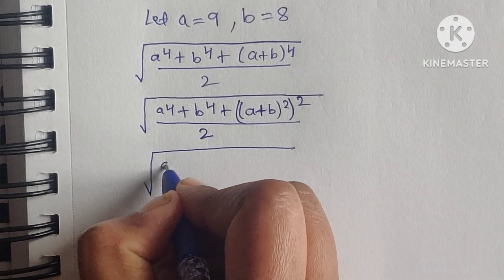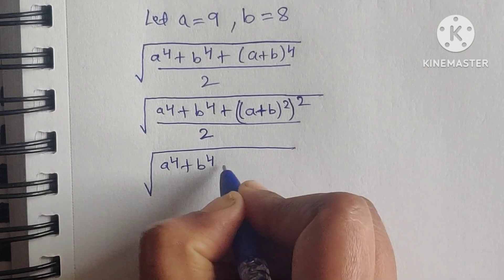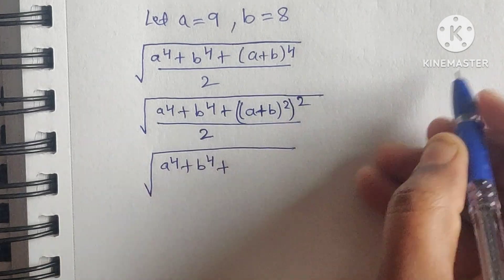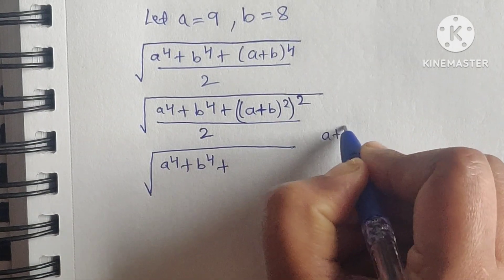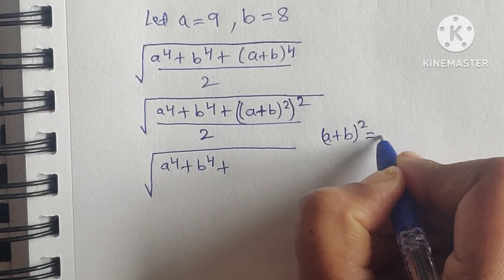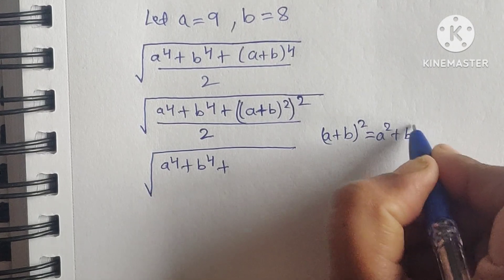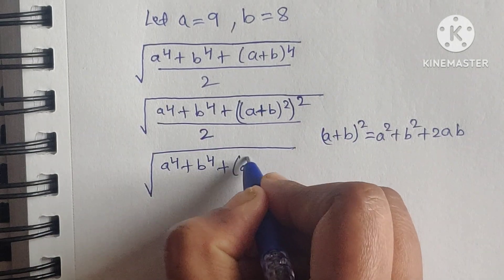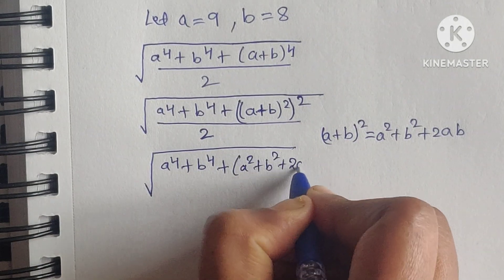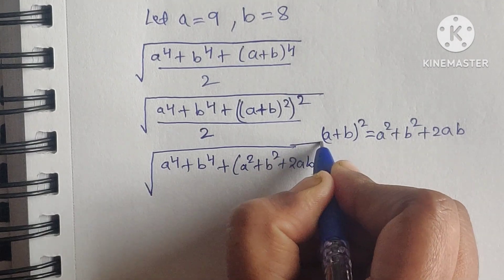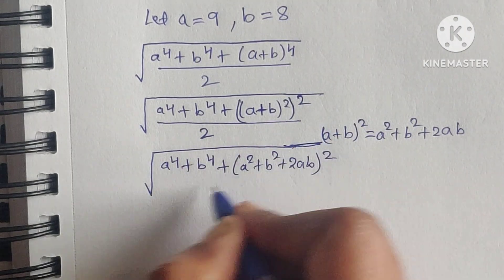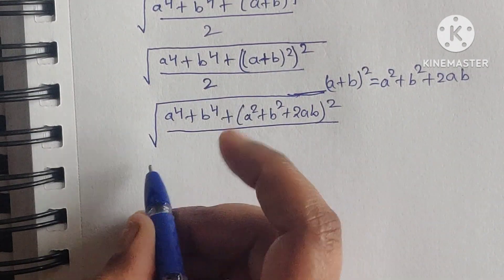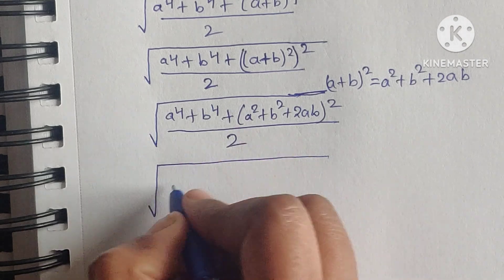Now, inside we have (a plus b) squared. Using the formula a plus b squared equals a squared plus b squared plus 2ab, we substitute to get the square root of a to the power of 4 plus b to the power of 4 plus a squared plus b squared plus 2ab, whole squared, divided by 2.